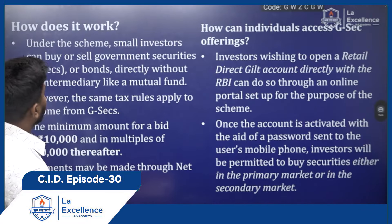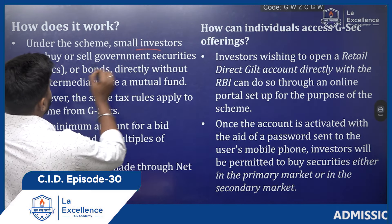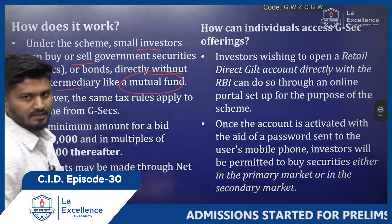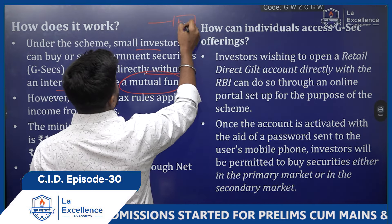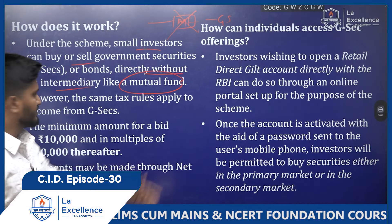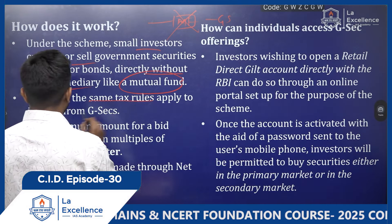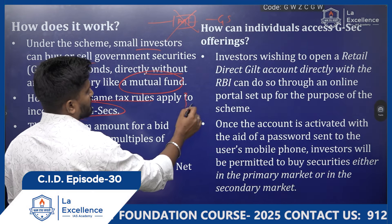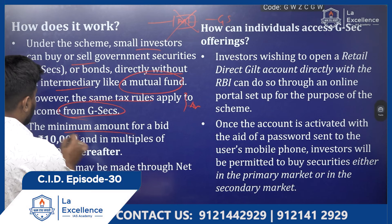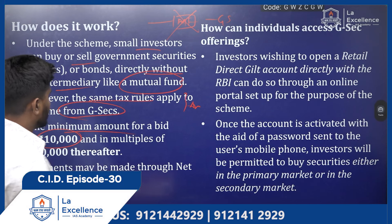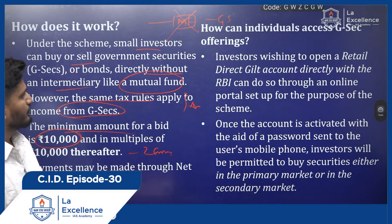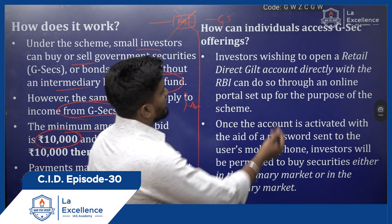Under the Retail Direct Scheme, small investors can buy or sell government securities or bonds directly without an intermediary like a mutual fund. However, the same tax rules apply to income from government securities — this is considered a drawback, as critics argue the tax rate should be lower for retail investors. The minimum investment amount is ₹10,000 and multiples thereof, and the maximum is ₹2 crore. Payments may be made through net banking or UPI.